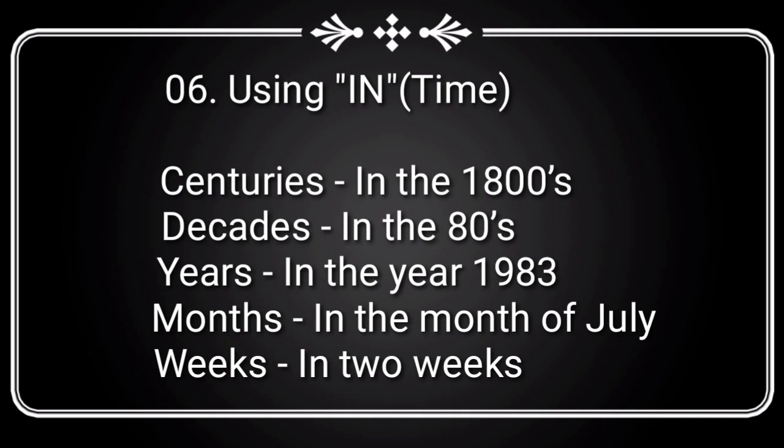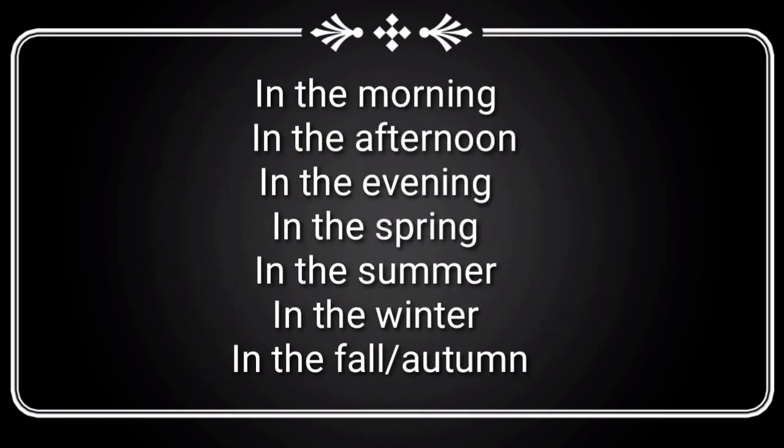Point 6: using 'in' for time. For centuries we say 'in the 1800s'; for decades, 'in the 80s'; for years, 'in the year 1983'; for months, 'in the month of July'; for weeks, 'in two weeks'. A few more examples: 'in the morning', 'in the afternoon'.